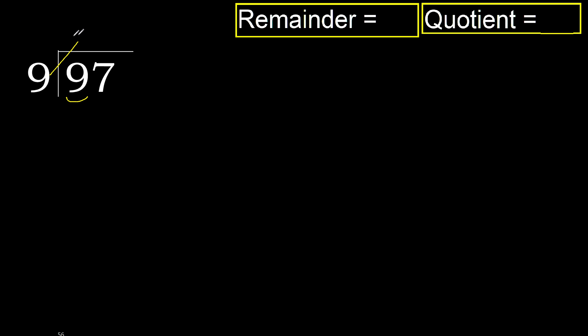9 multiplied by 2 is 18. 18 is greater. 9 multiplied by 1 is 9. That is not greater, so subtract — remainder is 0.